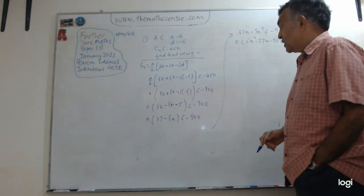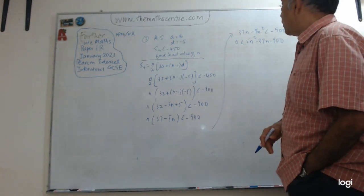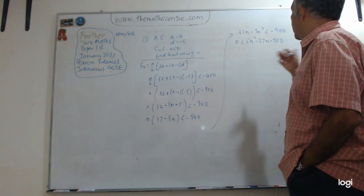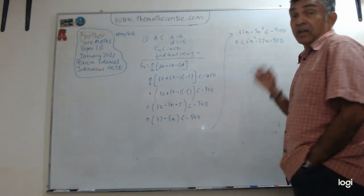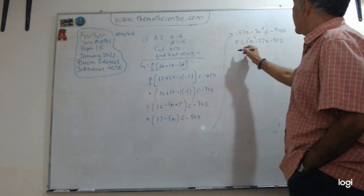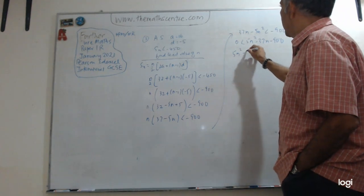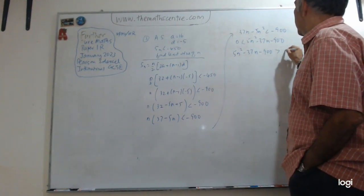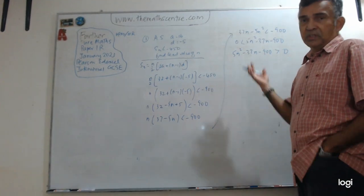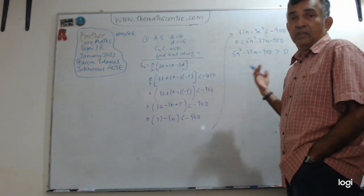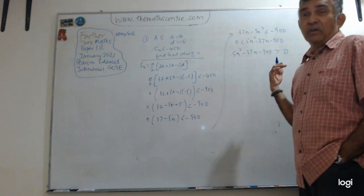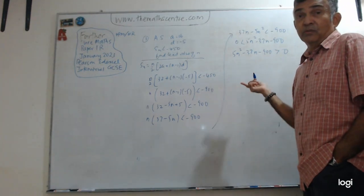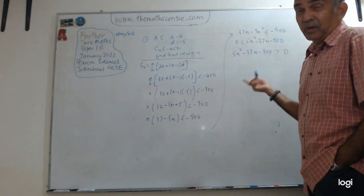Bringing everything to one side, I have 0 less than 5n² minus 37n minus 900, which is the same as writing 5n² minus 37n minus 900 is greater than 0. So now we have a quadratic inequality. This doesn't look like something you can easily factorize.